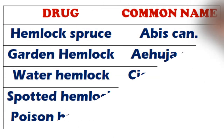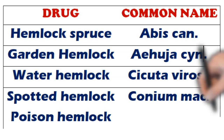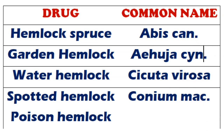Garden hemlock is the common name of Aethusa cynapium. Similarly, water hemlock is the common name of Cicuta virosa, and spotted hemlock or poison hemlock are the common names of Conium maculatum.